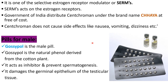One question that may come to mind is: are there any pills for males? Yes, there are pills for males also available in the market. The name of the male pill is Gossypol (G-O-S-S-Y-P-O-L). Gossypol is a natural phenol extracted from the cotton plant. Gossypol acts as an inhibitor and prevents spermatogenesis. It damages the germinal epithelium of the testis — the main place where spermatogenesis begins — and thereby inhibits the formation of sperm.